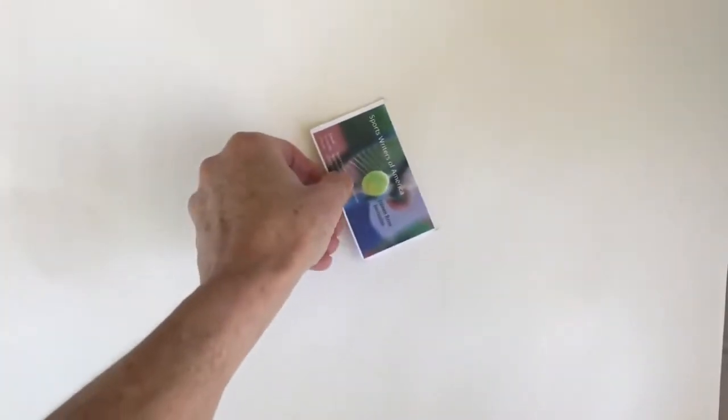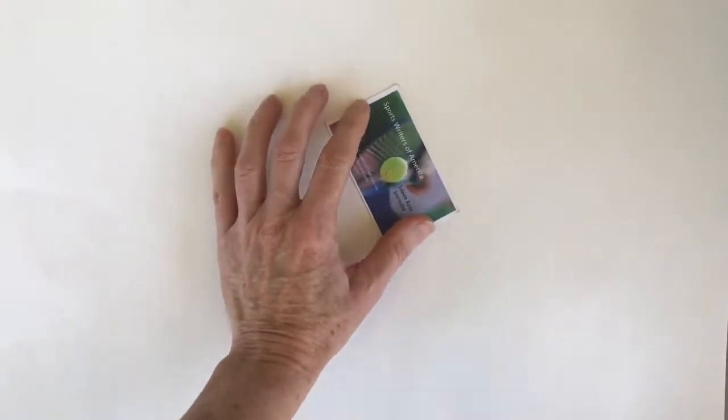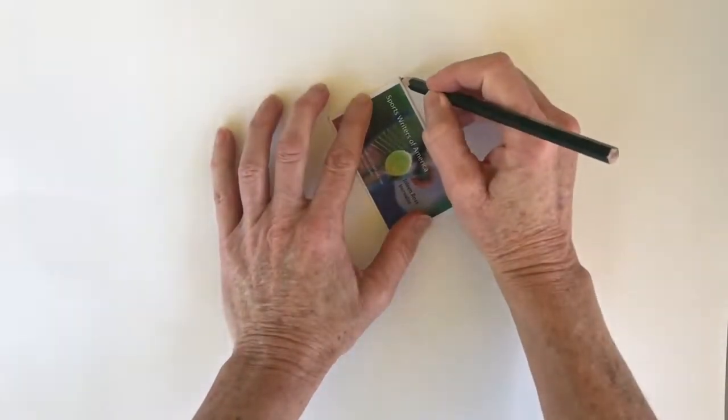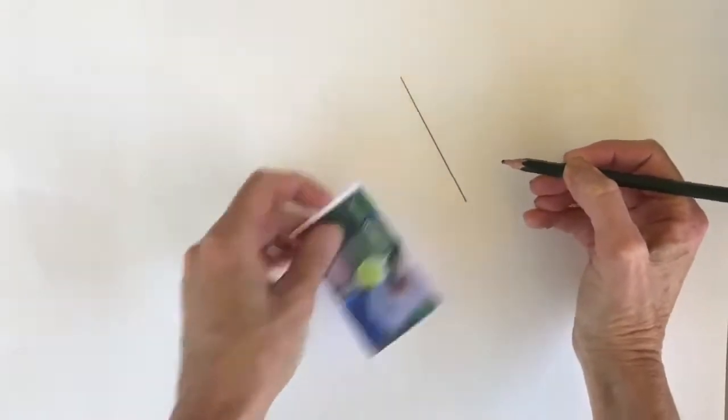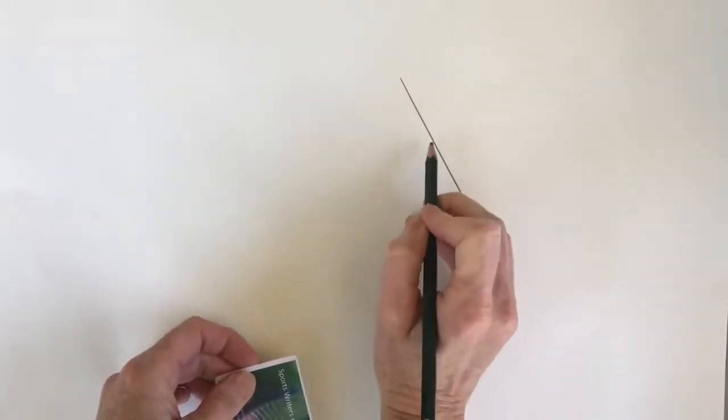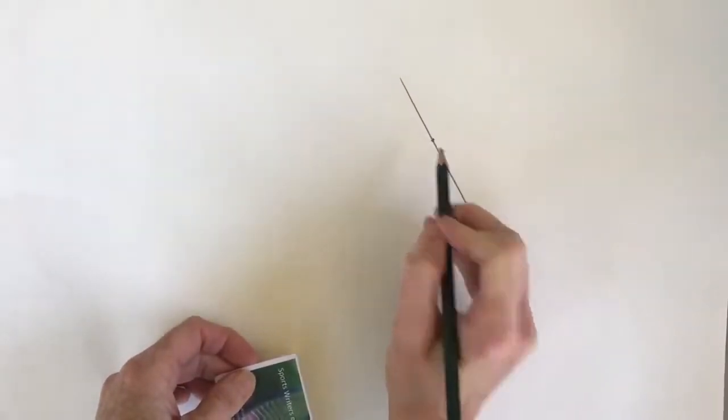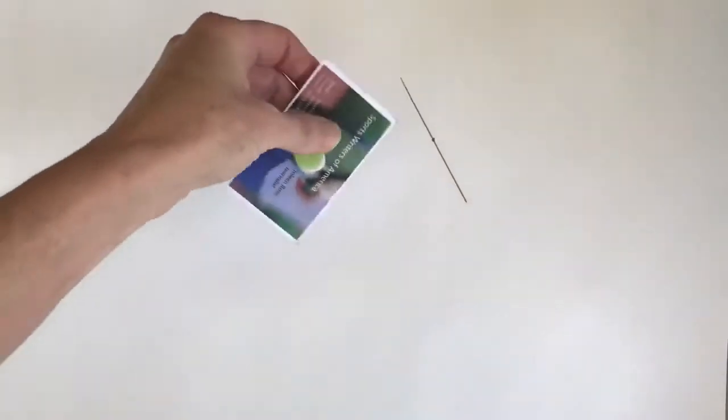You're going to want to find a straight edge to draw from and to trace. This length is just about perfect—it's a business card. I'm drawing one diagonal slanted line and putting a dot in the center.